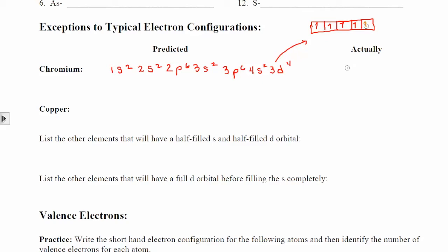Where did this electron come from? What chromium does is take an electron from the 4s so that it can be added to the 3d orbital to make it half filled. It's better to have two half-filled orbitals than one completely filled and one awkwardly almost half-filled. So the actual electron configuration for chromium is 1s2, 2s2, 2p6, 3s2, 3p6, 4s1, and then 3d5.